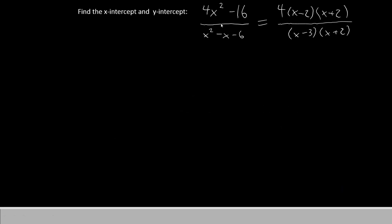Our rational function this time is 4x squared minus 16 divided by x squared minus x minus 6, and our goal is to find the x-intercept and the y-intercept. Now we factored this down into simpler form in the previous episode, so I've written that here as well: 4 times x minus 2 times x plus 2 divided by x minus 3 times x plus 2.